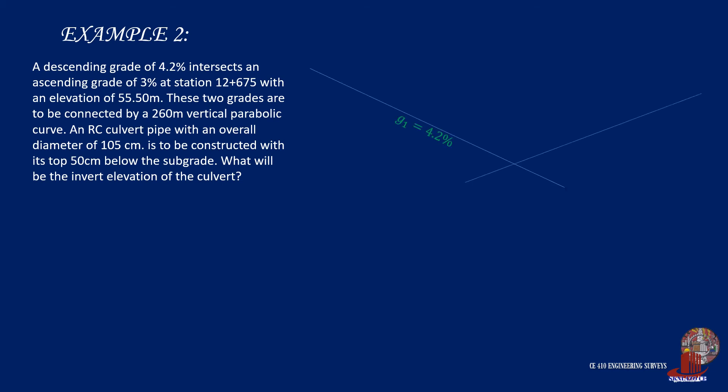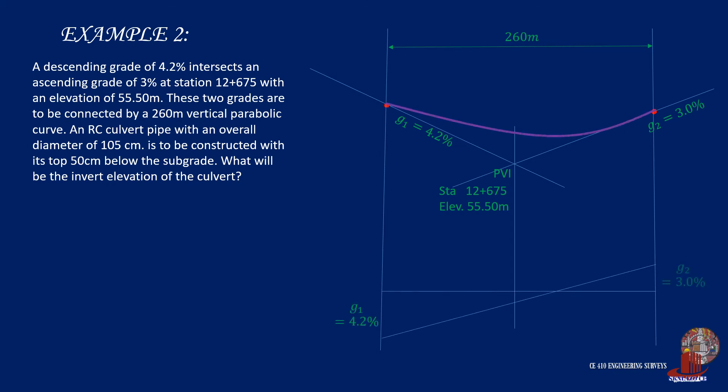Again, draw the grades of 4.2% descending and 3% ascending where they meet at PVI with station of 12 plus 675 and elevation of 55.5 meters. The length of the curve is also given as 260 meters. Additionally, a reinforced concrete culvert pipe of 105 centimeters diameter is to be placed under the curve. As per design, culverts should be placed in the lowest point of the curve. Thus, we need to determine the location of the lowest point.